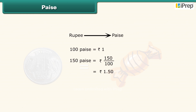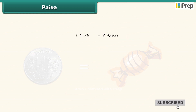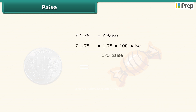Thus, when we convert paise to rupees, we divide it by 100. How will you convert 1.75 rupees into paise? Multiplying 1.75 with 100, we get 175 paise.